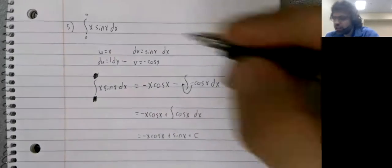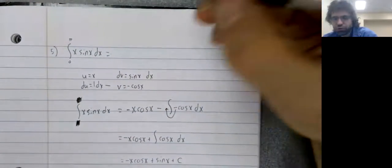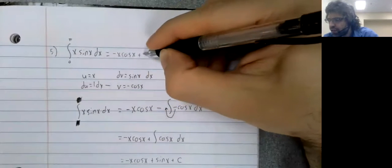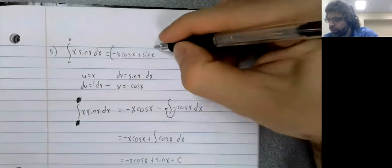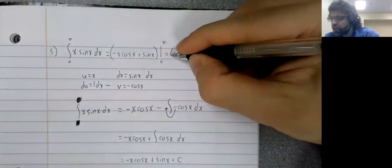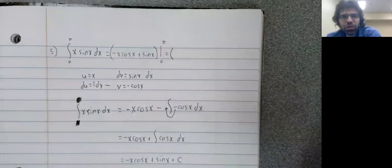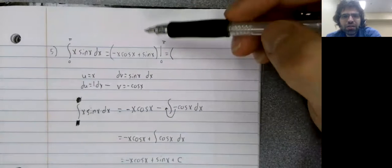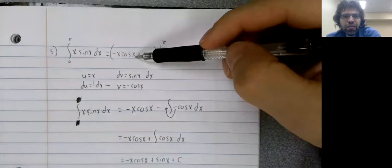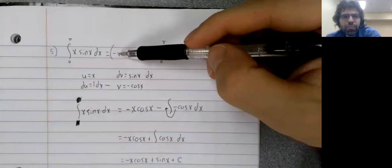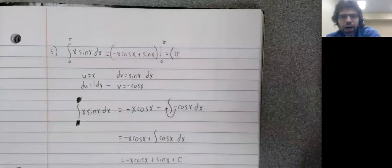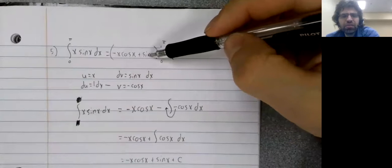And now we just, now that we have an indefinite integral, we can find the definite integral using the fundamental theorem. We could just plug these into our calculator, but let's see if I can get this. We plug pi in. The cosine of pi is negative one. So negative pi times negative one. Positive pi. The sine of pi is zero.